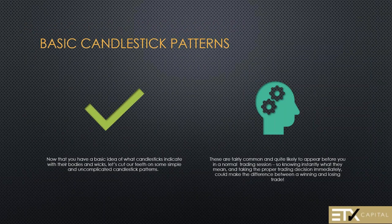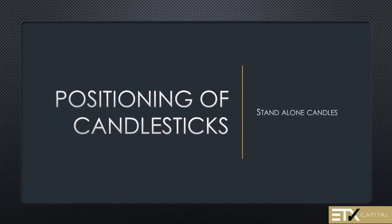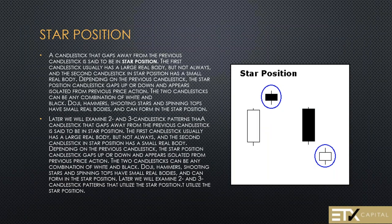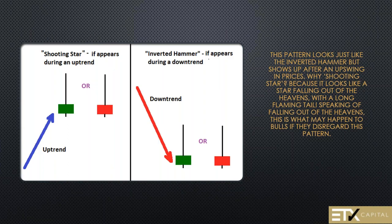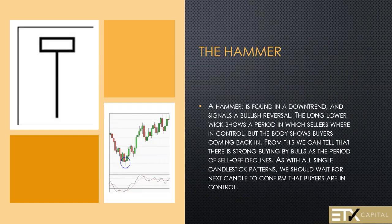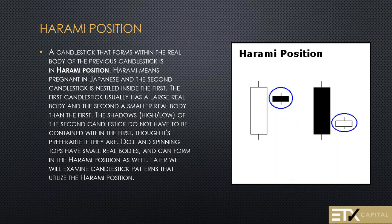It's important not to just say 'I see a marubozu' or 'I see a doji.' You have to look at where it's appearing and where the trend is appearing. Now that you have a basic idea of what candlesticks indicate with their bodies and wicks, let's look at some simple and uncomplicated patterns. These are fairly common and quite likely to appear in a normal trading session. We've talked about mostly stand-alone candles, the star position which was the gap, shooting stars and inverted hammers which are the reverse of each other. And then we have my favorite, a harami - harami in Japanese means pregnant. A harami is a two-session candle that tells you something is about to happen.